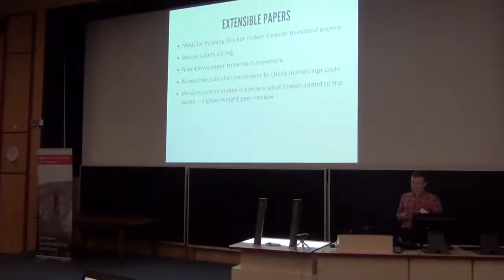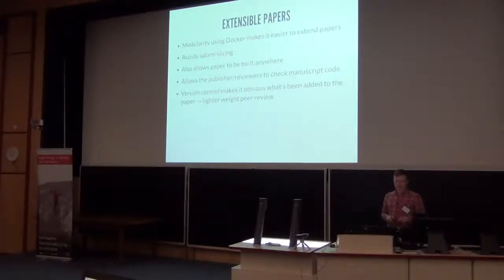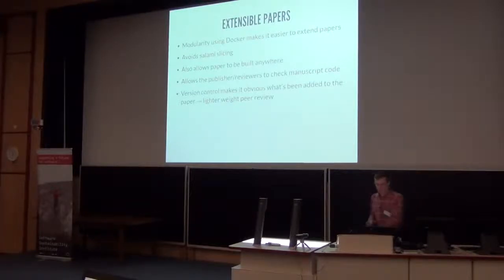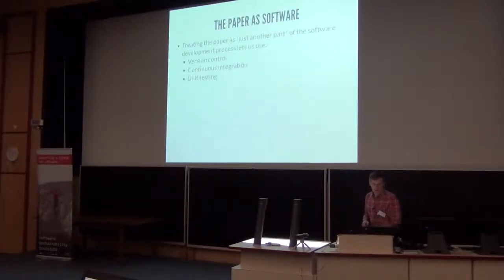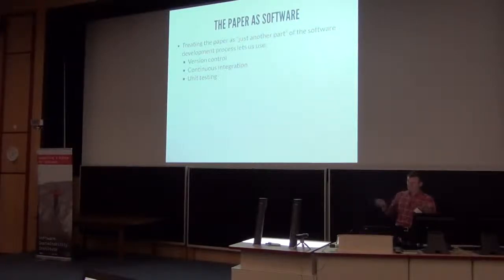The containerization means you can build the paper anywhere. Because we're doing this in a reproducible way, it's completely transparent — the publisher, the reviewers, and the readers can all check the code. Because it's all in version control, it's very obvious what's changed if we extend the paper, so you could just peer review those changes. We're treating the paper — that final output — as just another part of the software. So it's in version control, we could use continuous integration, and we can do unit testing too.